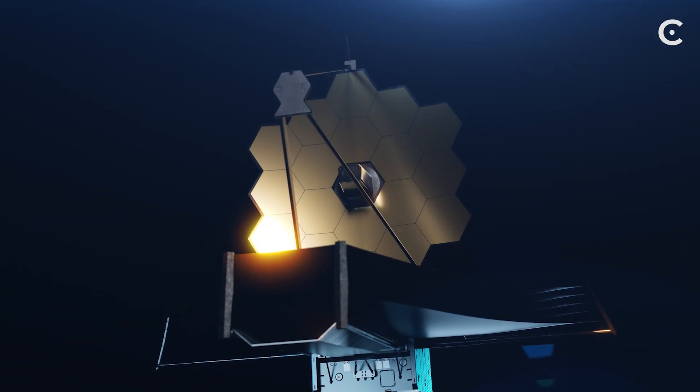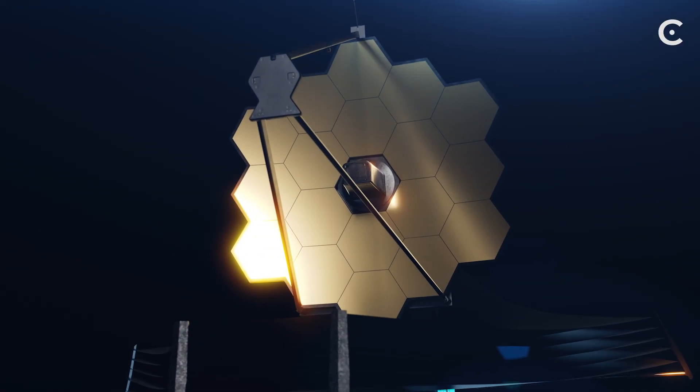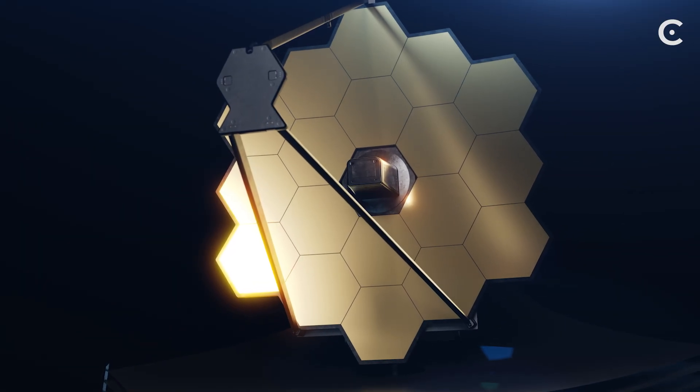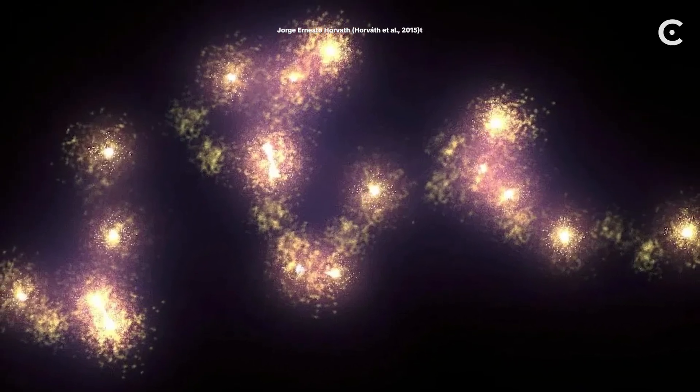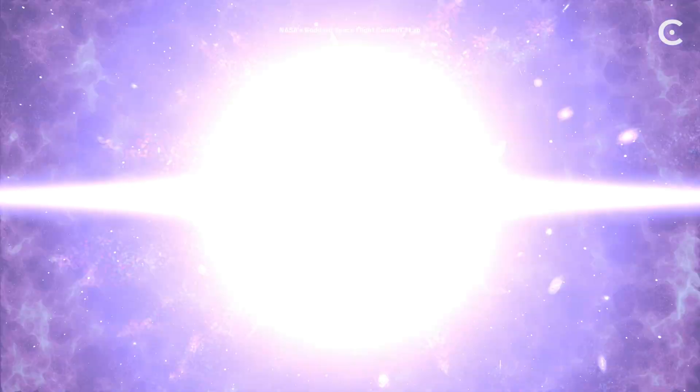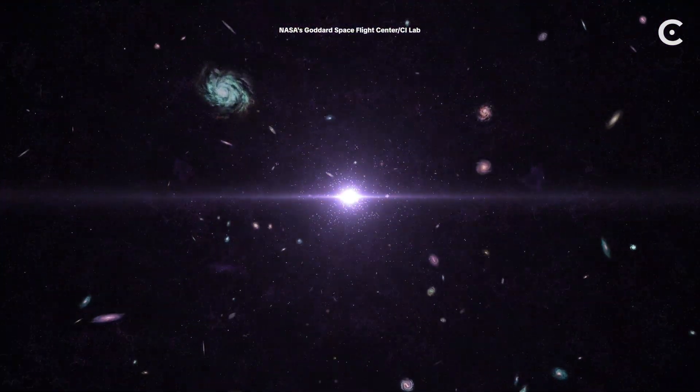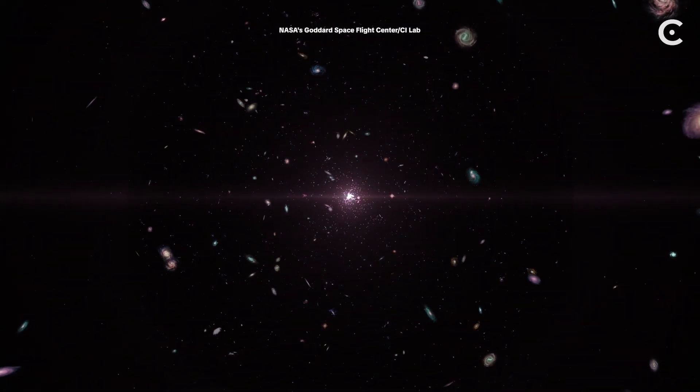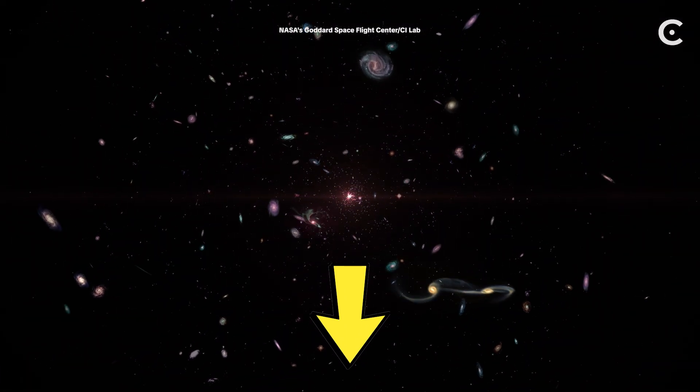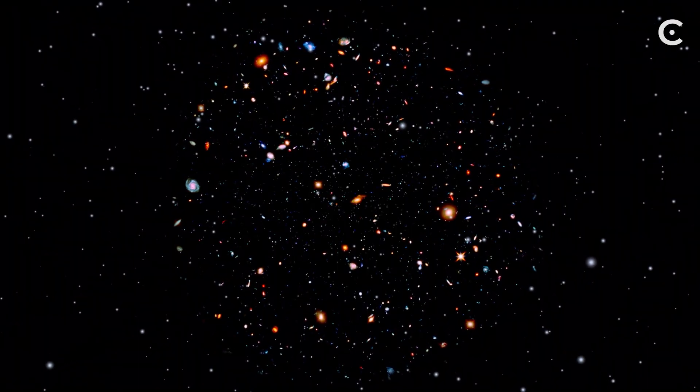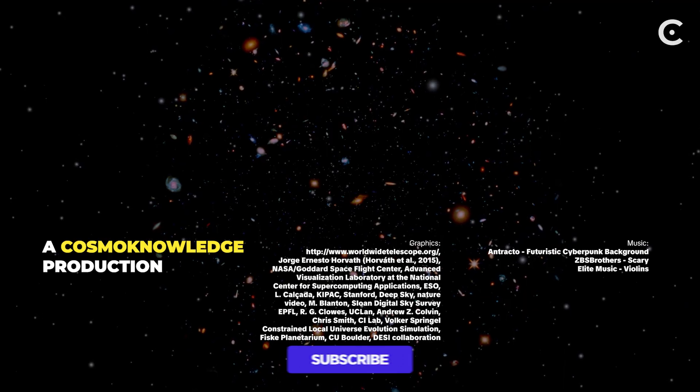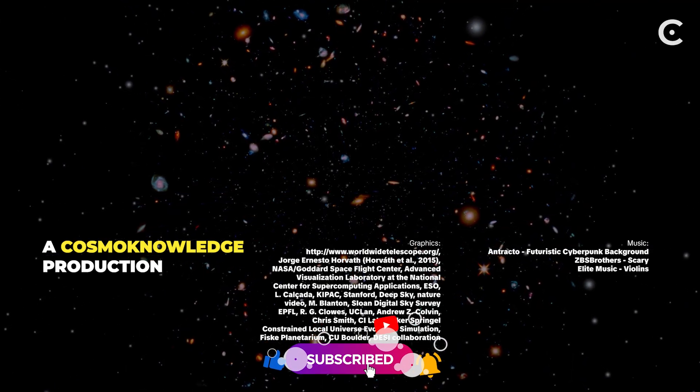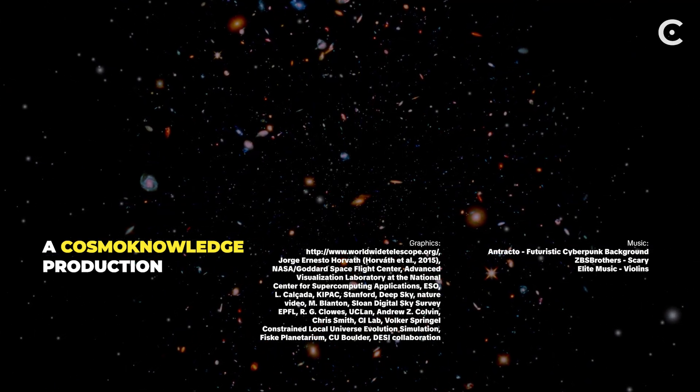Every time we build a bigger telescope or survey a wider patch of sky, we find something that makes us rethink the rules. So here's my question for you. If structures like the Hercules-Corona Borealis Great Wall are real, what does that mean for the cosmological principle? Should we throw it out? Or is there something about gravity and cosmic evolution we're completely missing? Drop your thoughts in the comments. I genuinely want to know what you think. And if you want to go even deeper into cosmic mysteries, check out this video on dark matter next. Because dark matter might be the invisible scaffolding holding them all together. Thanks for watching. I'll see you in the next one.